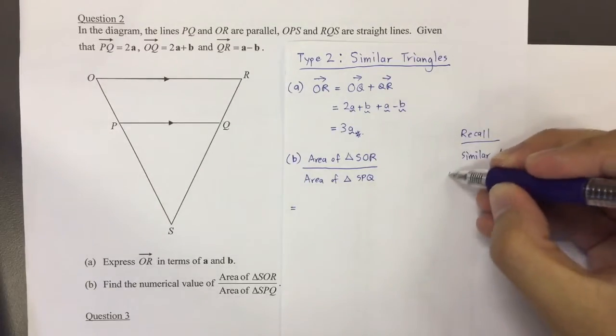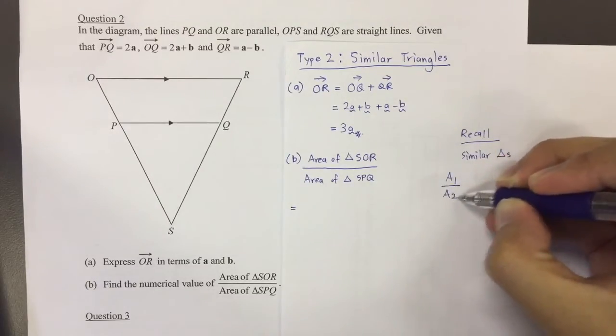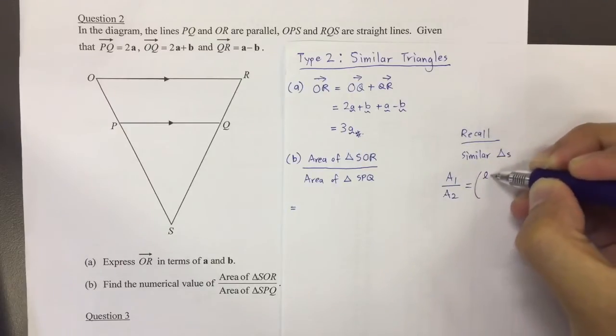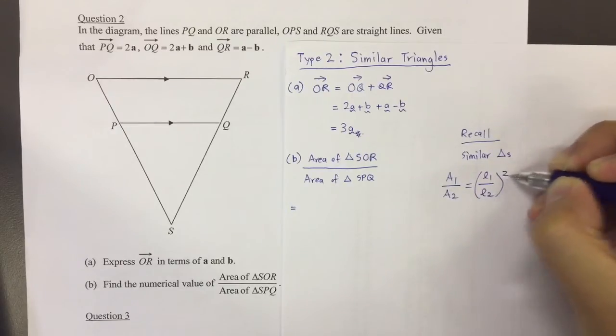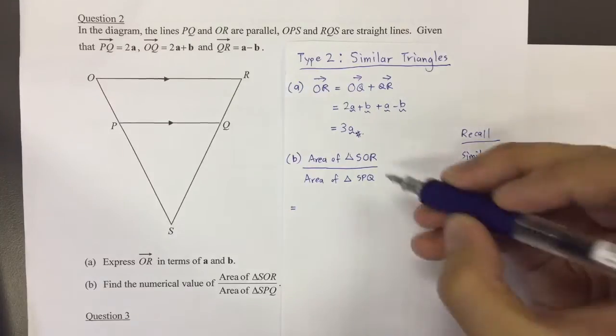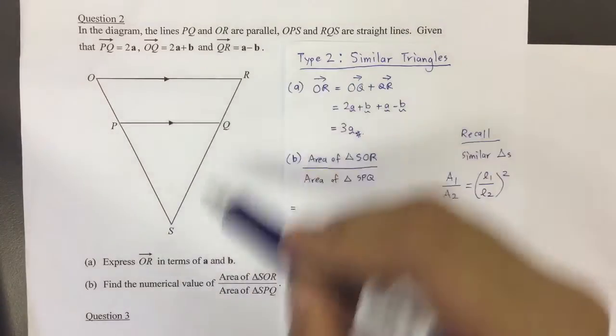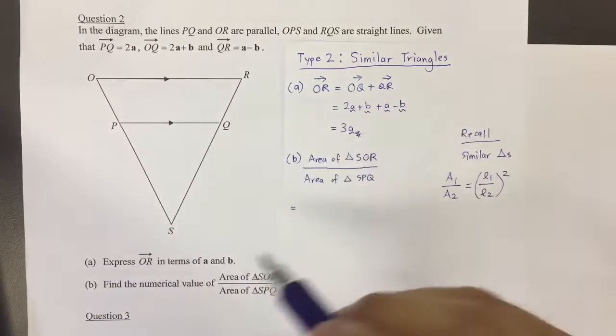So recall that when the two figures are similar, basically the ratio of the areas can be actually expressed as the ratio of their lengths squared. Alright, so SOR and SPQ. We're going to choose a known pair of sides.